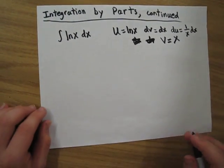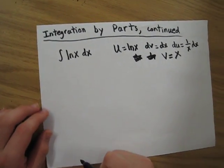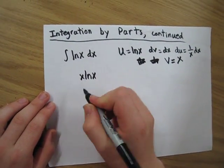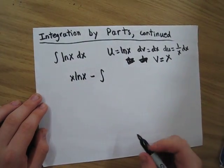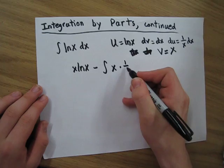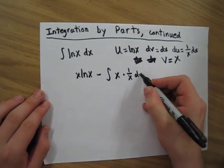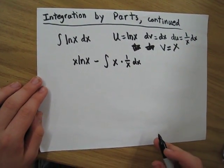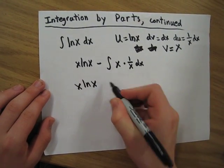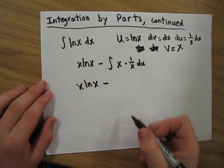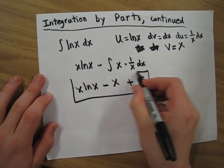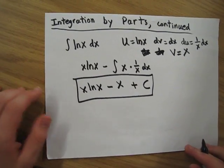Now when we apply the formula, we get uv is x times natural log of x minus the integral of v du, which is x times 1 over x dx, or 1 dx. When we integrate that, we get x, add plus C, and that is our final answer for the integral of natural log of x.